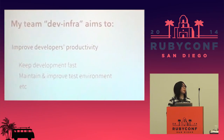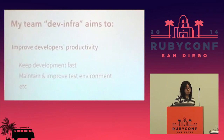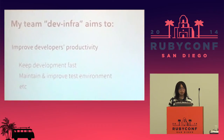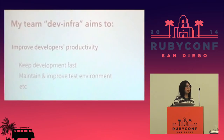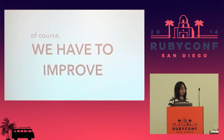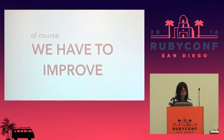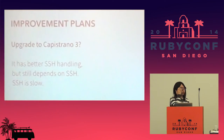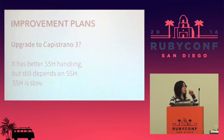Let me introduce my team. My team, Development Infrastructure, aims to keep and improve developers' productivity — like keeping development fast, and maintaining and improving our test environment, and things like that. Of course, we have recognized this state is a problem, so I started working to improve it. Here are the plans. One is replacing Capistrano 3 from scratch.